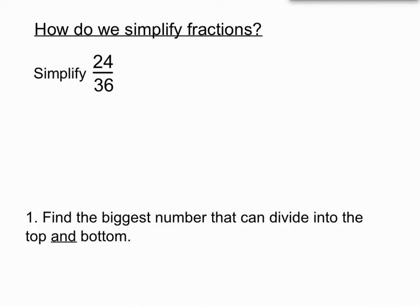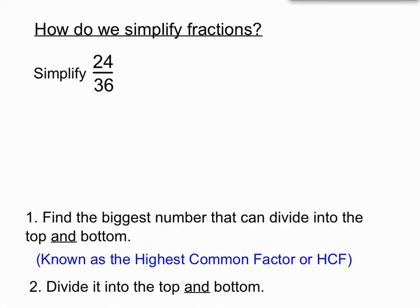We're supposed to find the biggest number that divides into the top and bottom, and then that's known as the highest common factor, and then we should divide it into the top and bottom. But I'm going to make a bit of a blue here. I'm actually going to divide the top and bottom by 3 now. Some of you will be able to spot that there are bigger numbers that can divide into 24 and 36, but I'm doing this to make a point.